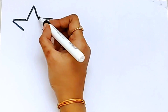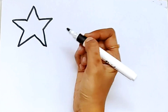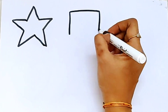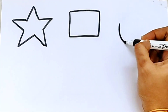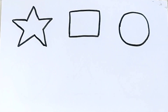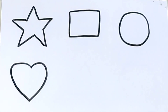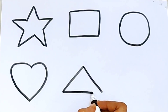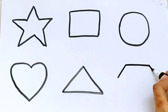This is a star. What shape is this? Star shape. This is a square. This is a circle. This is a heart shape. What is the next shape? It's a triangle. This is a hexagon.